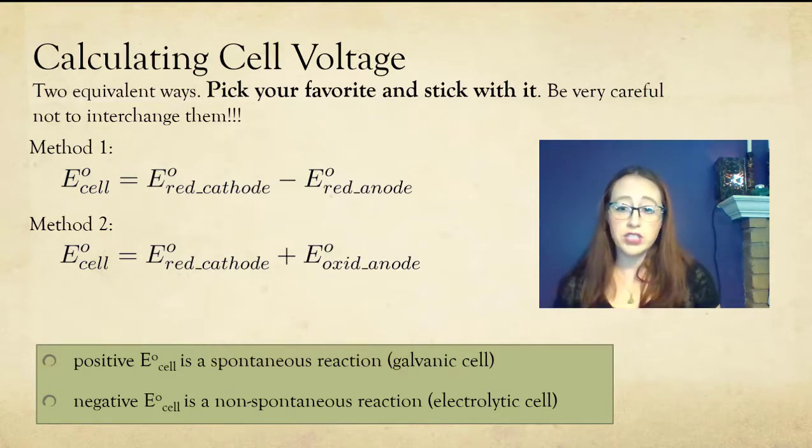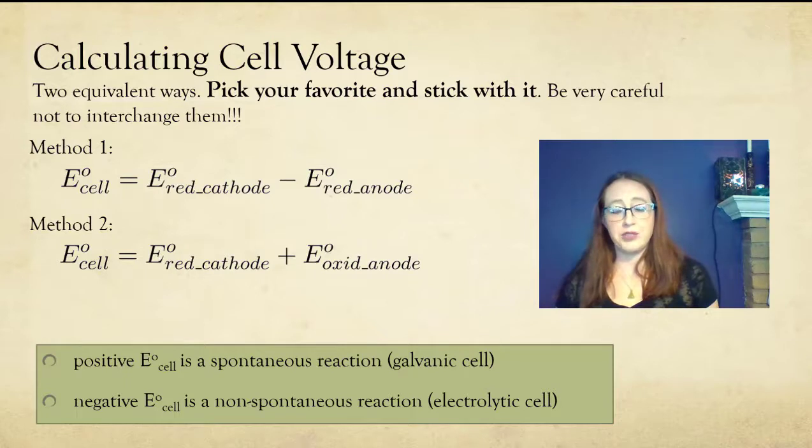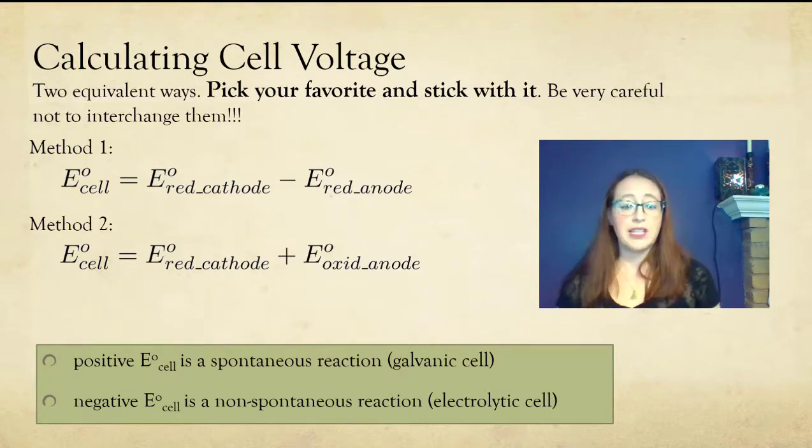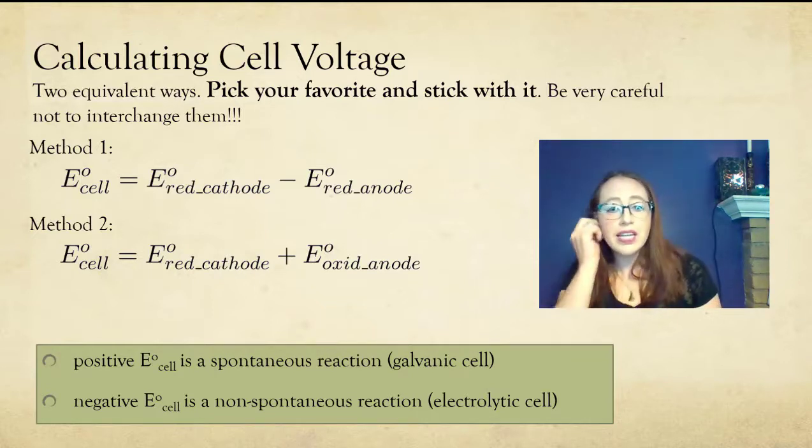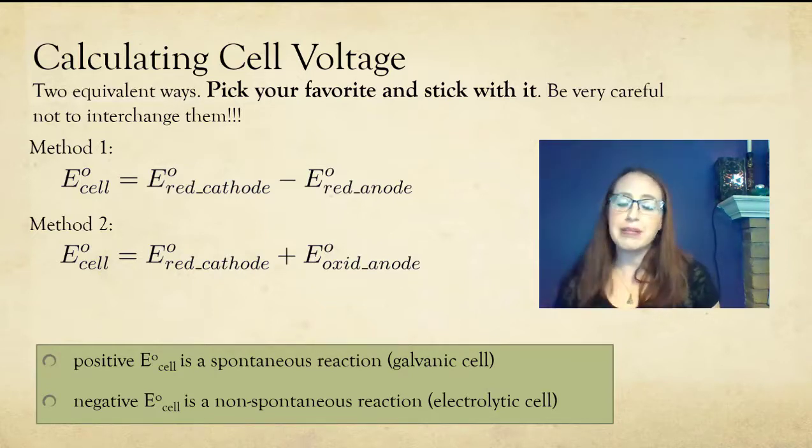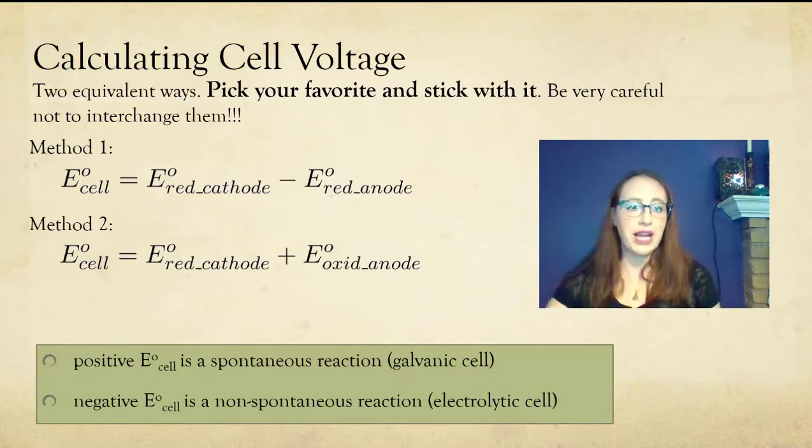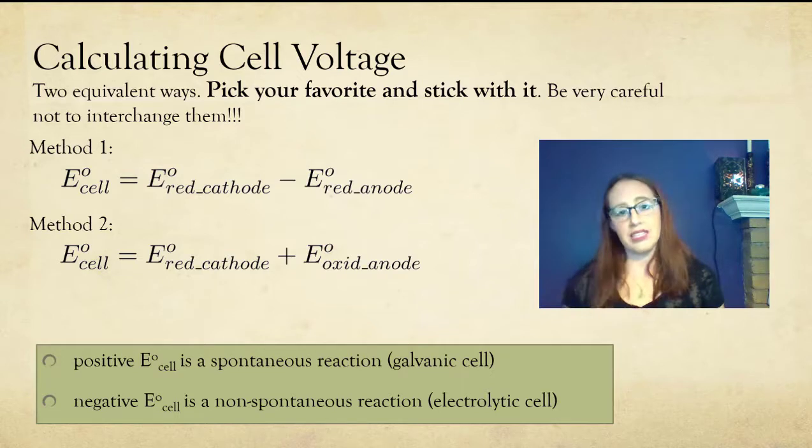So now moving on. If we get a positive voltage, that means the cell is spontaneous. So that's important, and I'm going to say it one more time. If we get a positive voltage, that means that the cell is spontaneous. Positive voltages result in spontaneous cells. And remember from our previous videos, that's a galvanic cell. If it's a negative value, that means that it's non-spontaneous, and a power source is going to need to be applied in order for the reaction to happen. And that's what we call an electrolytic cell.